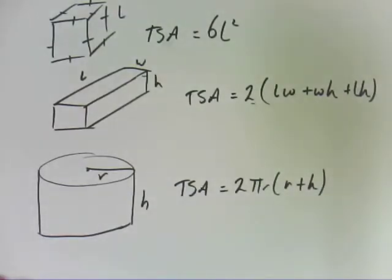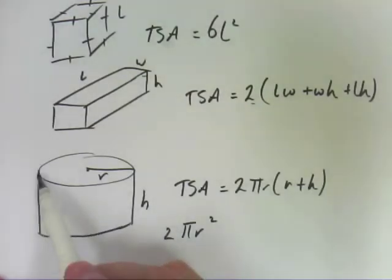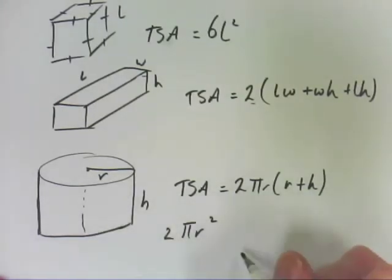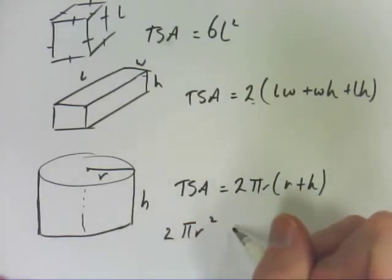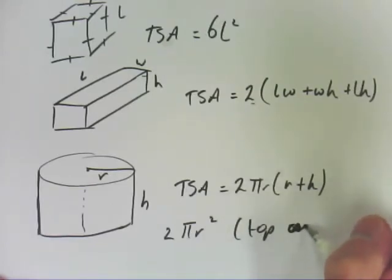Now that comes about because the area of a circle is pi r squared, so the area of the top and the bottom is pi r squared, and you've got two of them. And if you roll out - if you think of a tin can, if you cut the top and the bottom off, and then put a slice down the side and laid it out, you would actually have a rectangle. So that's for top and bottom.